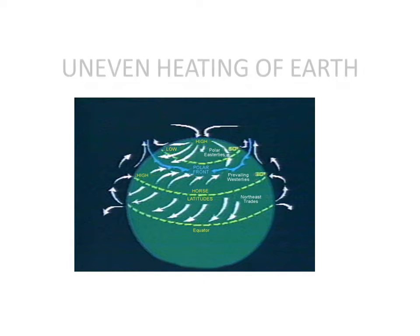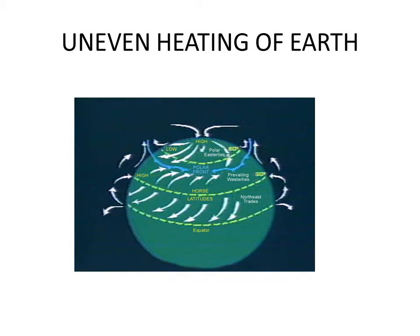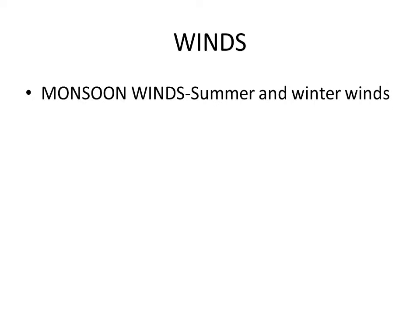Now let's learn about monsoon winds. The term monsoon has been derived from the Arabic term 'mossum'. Monsoon winds are the seasonal winds which blow from the Indian Ocean towards the Indian subcontinent in one season and then retreat from land towards the sea in another season of the year. Monsoon brings heavy rainfall to India and its neighboring countries.